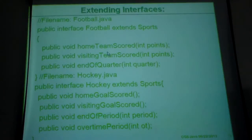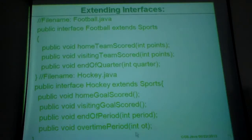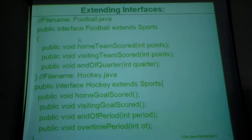So this interface has five methods total: three of its own and two inherited from the previous one. Now we create another new interface called 'hockey' that extends 'football'. It has how many methods? If you extend football, which already has five, it will be five plus its own, making ten total, but it extends only three more.